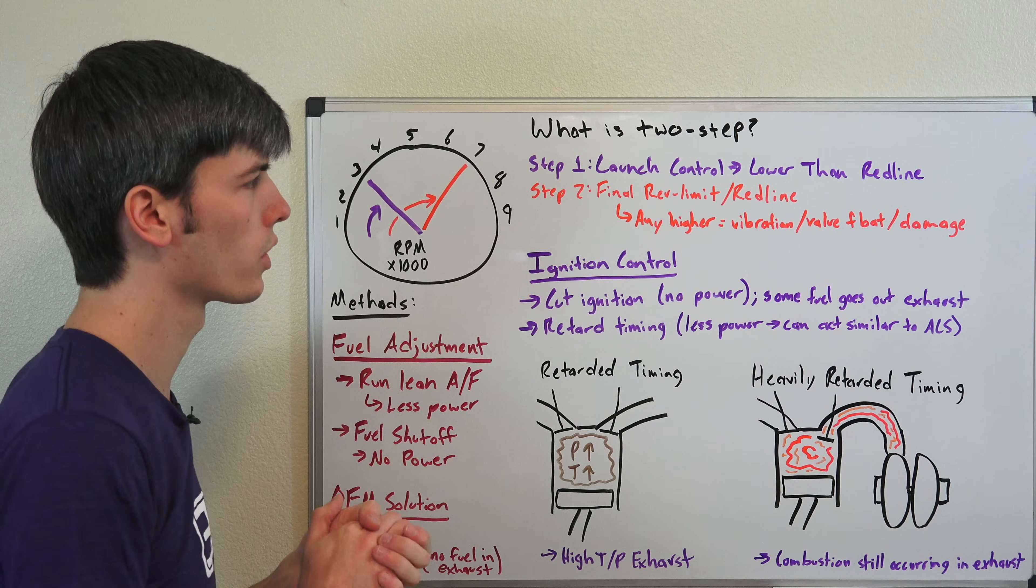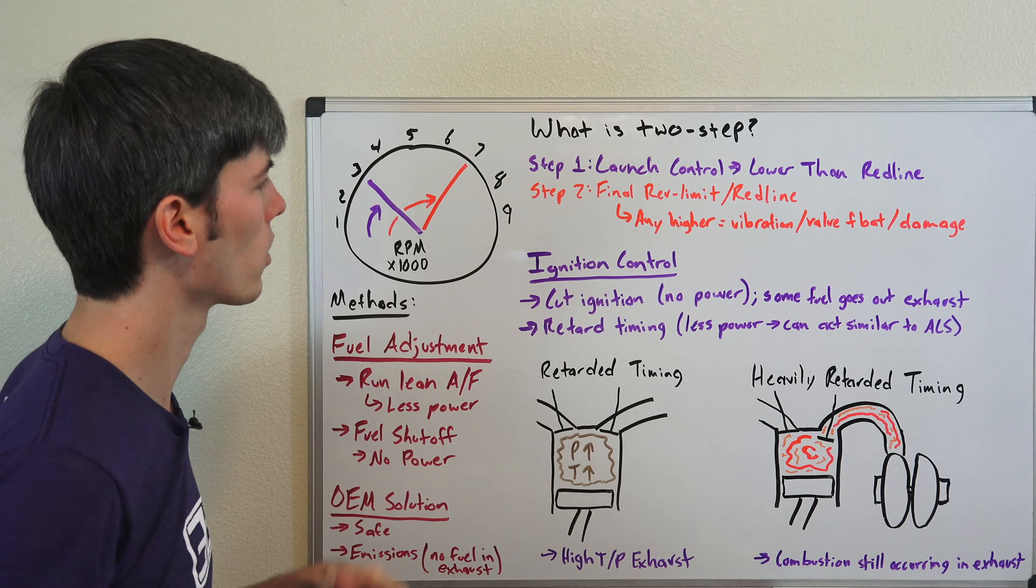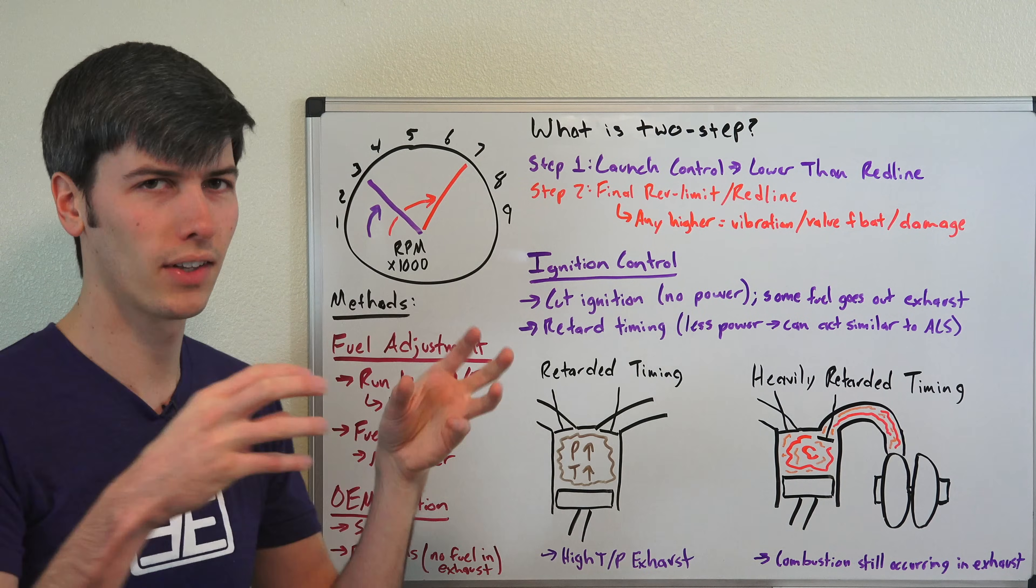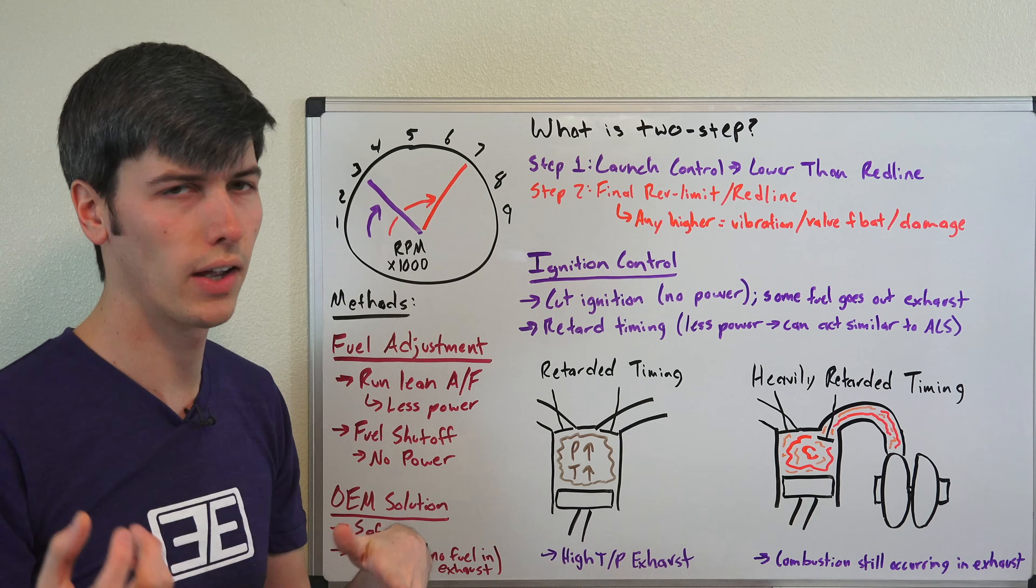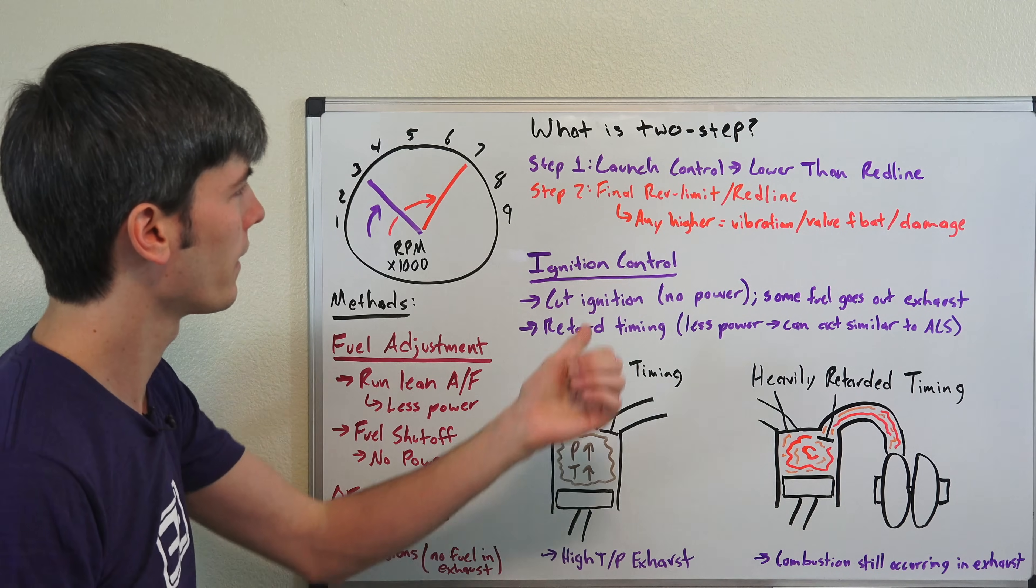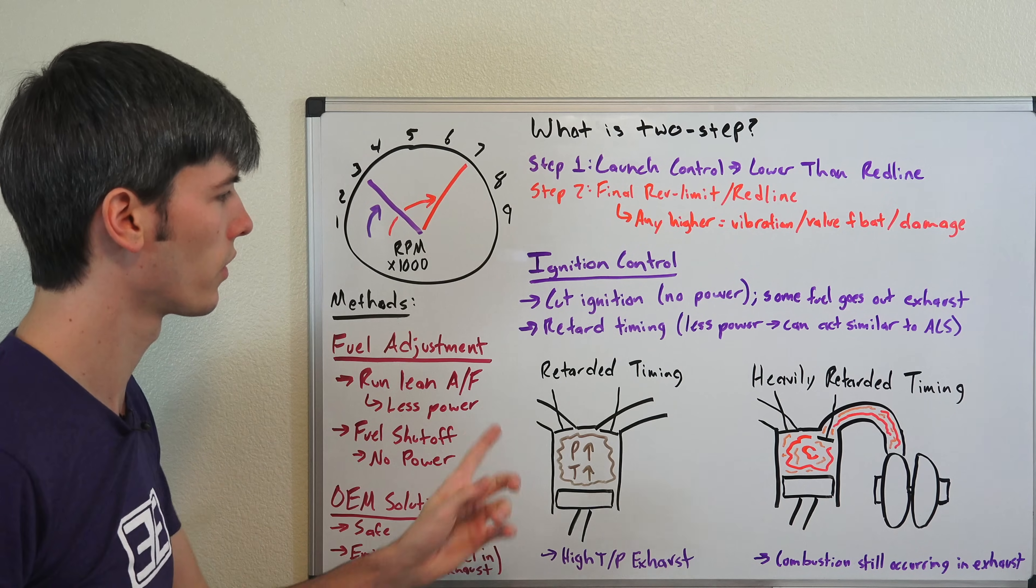There are two different methods which you can use for ignition control. You can cut ignition completely, so you're killing your spark. No spark, of course, in a gasoline engine, you're not going to have any combustion occurring, but you're going to be sending that fuel out your exhaust. So as that fuel goes out the exhaust, the exhaust is hot and mixes with oxygen. Once it leaves the exhaust, crackles, pops, you know, makes a little bang. And that's why two-step can be associated with seeing fire coming out the back of an exhaust.